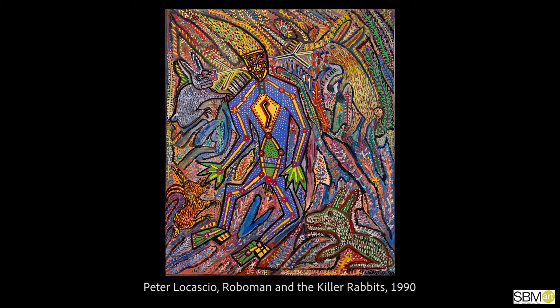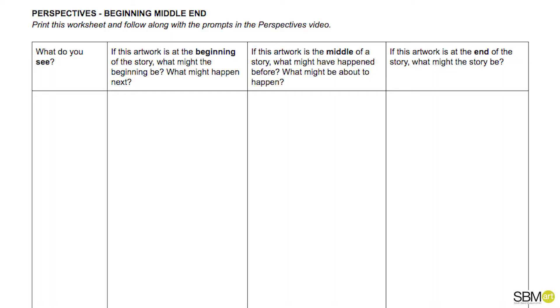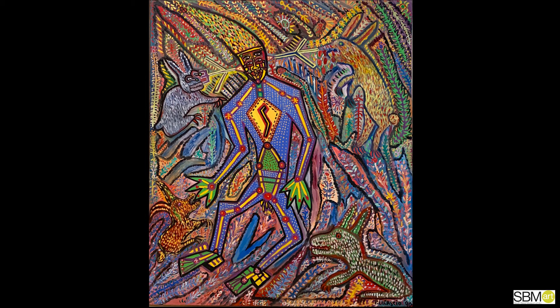In this exercise, we will explore storytelling through a work of art from our permanent collection called Roboman and the Killer Rabbits. Take a moment to locate the pause button so you are able to complete this exercise at your own pace. If possible, you will want to download and print the worksheet from the website. The link is located on our website right above this video. If you don't have access to a printer, feel free to use your own blank paper.